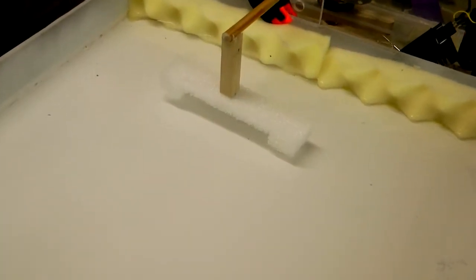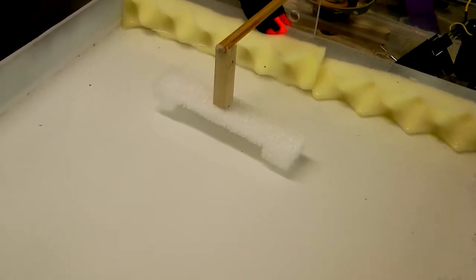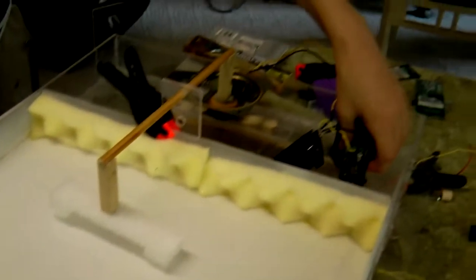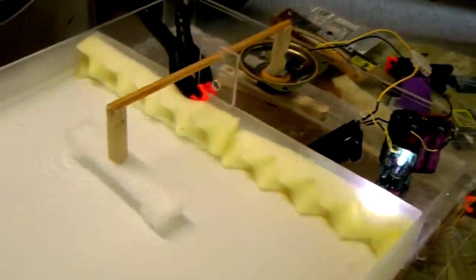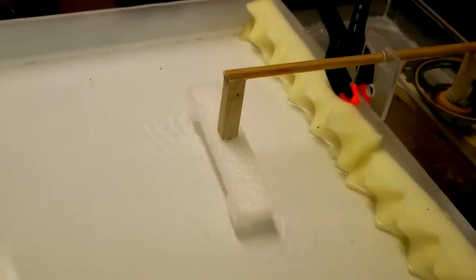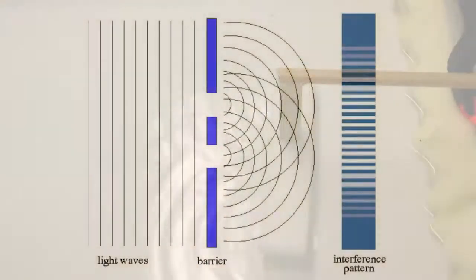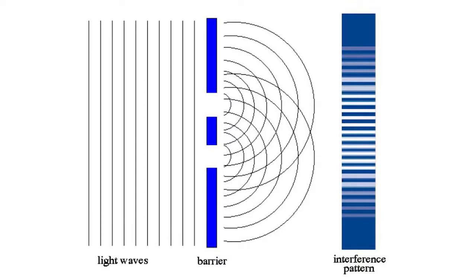But how can we prove that the interference pattern from two point sources really looks like this? This wave emitter has two small tips which act as point wave sources. The wave pattern is very similar to the one we just observed. The same interference pattern can be observed when light passes through a double slit.